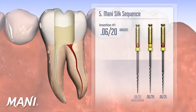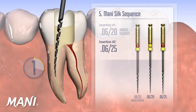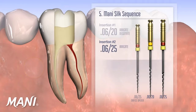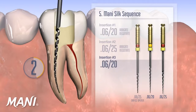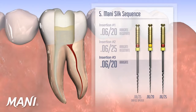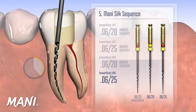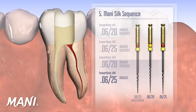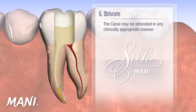After inserting each Mani SILK file, the canal should be irrigated and a hand file inserted to assure that the canal is open and negotiable. The .06/20 and .06/25 are alternately inserted until the apex is reached. Insertion is gentle, passive, and takes approximately three seconds per insertion. Once shaping is completed, the canal may be obturated in any clinically appropriate manner.